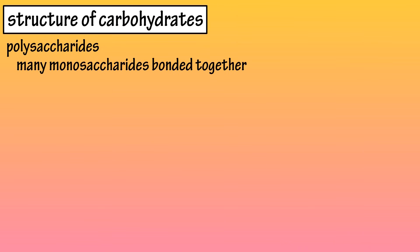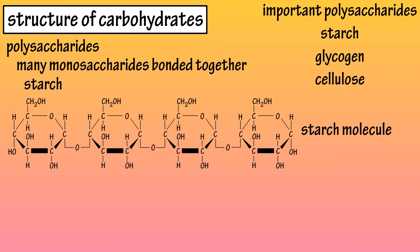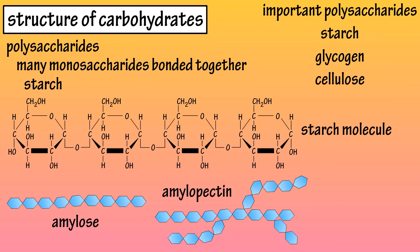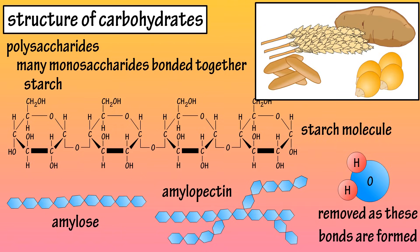Polysaccharides are formed when many monosaccharide molecules bond together. There are three polysaccharides that are important to the body: starch, glycogen, and cellulose. Starch consists of many glucose molecules bonded together, forming long chains called amylose, or branch chains called amylopectin. Water molecules are also removed as these bonds are formed. Starchy foods include potatoes, rice, wheat, and corn.